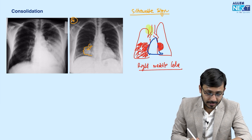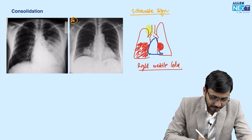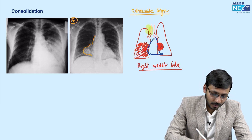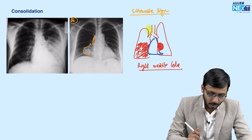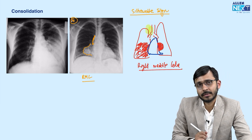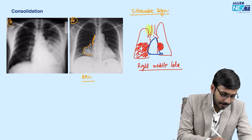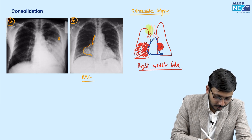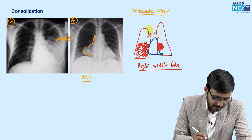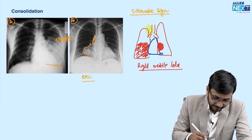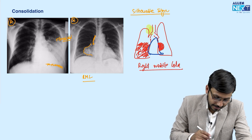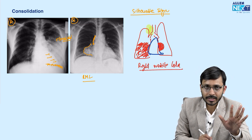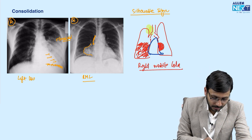We see a consolidation in the right middle and lower zone which is obscuring the right heart border — the right heart border is seen only till a certain point. This means the pathology or consolidation is in the right middle lobe. Whereas in image A, we see fluffy cloudy opacities coalescing — this is a consolidation obscuring the left hemidiaphragm, which is not seen, whereas the left heart border is seen. So this consolidation is in the left lower lobe.